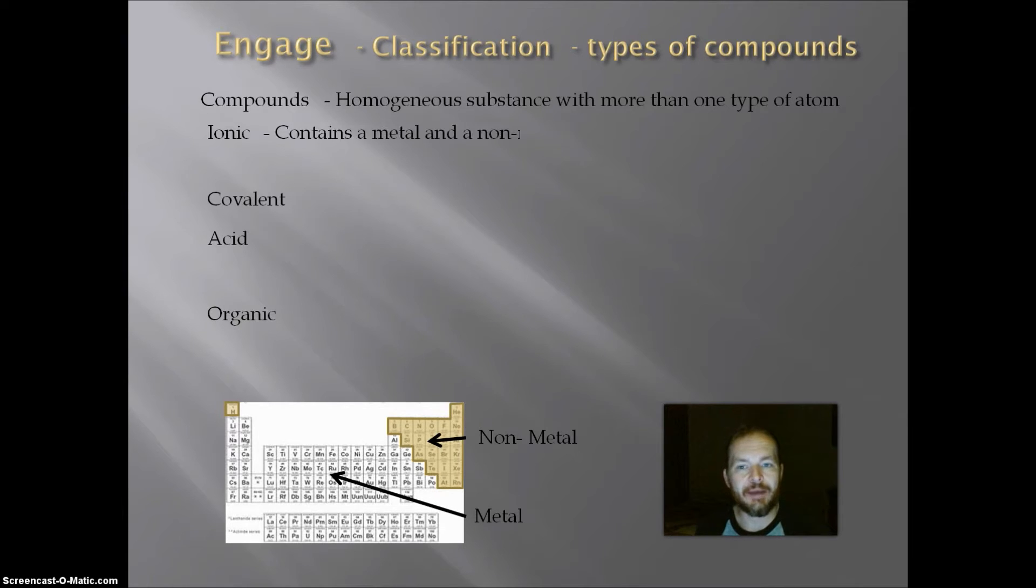Now in an ionic compound, we have a metal and a non-metal in the compound. And the one special case for this is that NH4, if you see that as a group, is treated as a metal. In an ionic compound, the name will end in ide, ite, or ate.